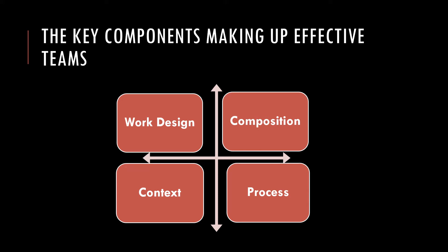The first category is work design. Second is related to team composition. The third one is the resources and other contextual influences that actually make the team effective. And the fourth key component is processes — process variables that reflect those things that go on in the team and actually influence the effectiveness of the team.